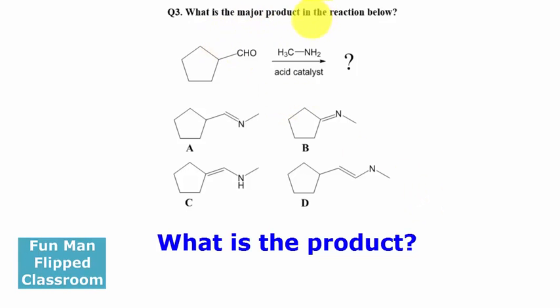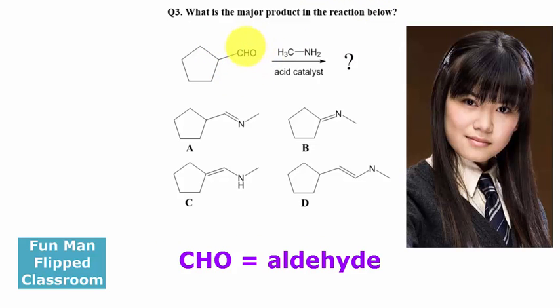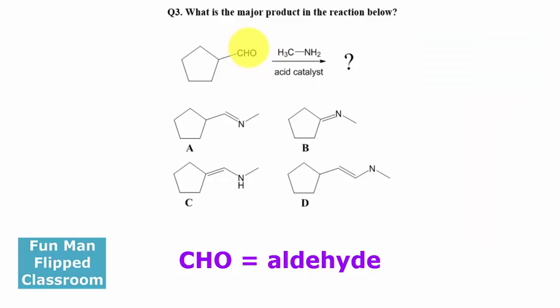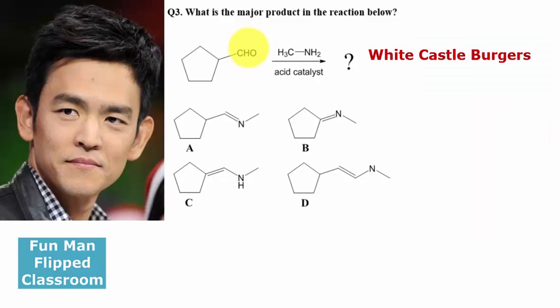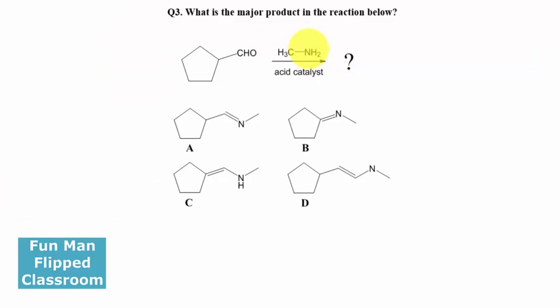What is the major product in the reaction below? You have an aldehyde - Chou is an aldehyde, it's also quite a popular Korean surname. We are also given the amine, an amine attached to two hydrogens. This is a primary amine.